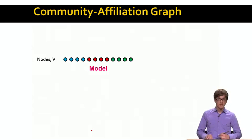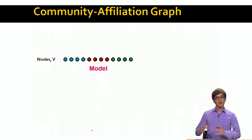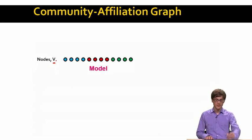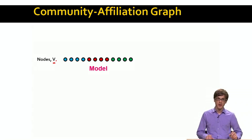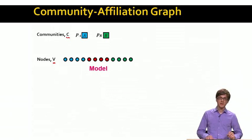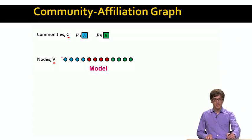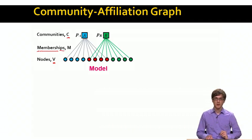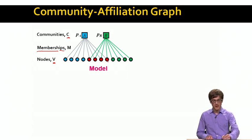The model we will be talking about is called the community affiliation graph model. The model is specified as follows: we have a set of nodes V — these are the nodes of my underlying social network. And then I have another set of nodes that I will call communities — I call this set C. Every node can be a member of any of the communities, so we have membership edges. The blue node is a member of community A, green nodes are members of community B, and the four red nodes belong to both community A and community C.